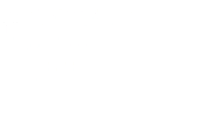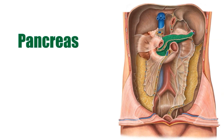As I'm highlighting right now, the pancreas in green is an accessory organ of the gastrointestinal tract and the endocrine system. It is a unique organ because it serves as two glands in one — a digestive exocrine gland and a hormone-producing endocrine gland.